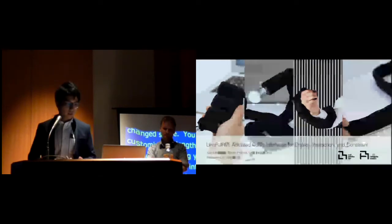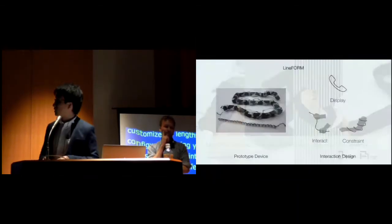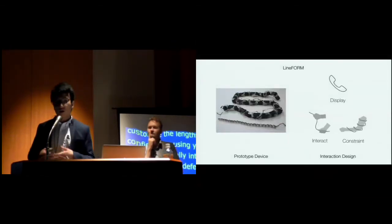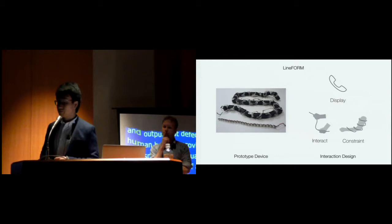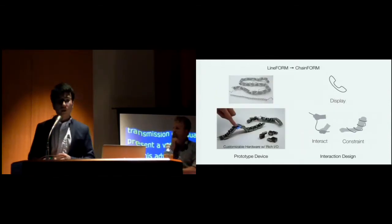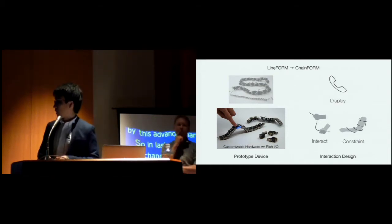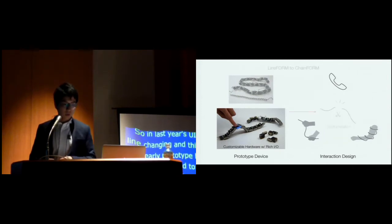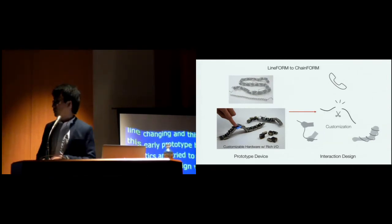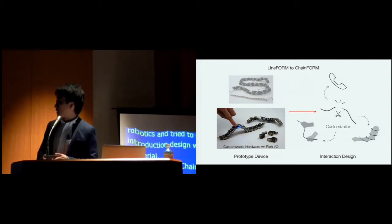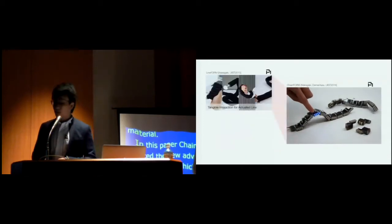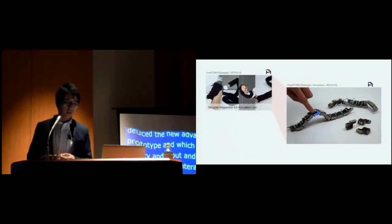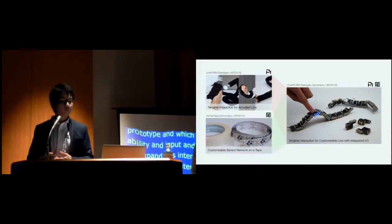In last year's UIST, we presented LineForm to start exploring to use the shape of a line as a shape-changing interface. In this research, we made this early prototype based on snake robotics and tried to define the interaction design with a line-based material. In this paper, ChainForm, we introduced the new advanced version of a prototype which has customizability and rich input and output.